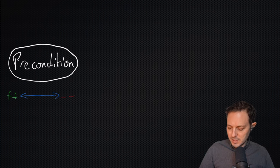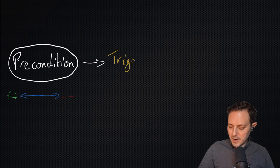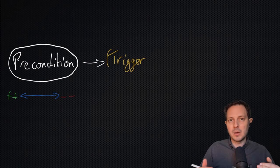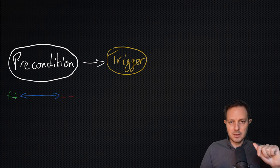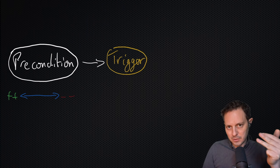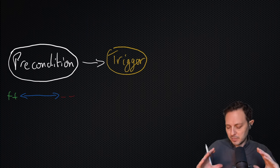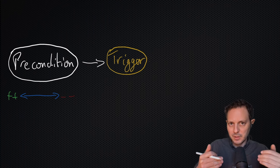From the precondition, we move into the next step. The next step is having a trigger, something that will generate a reaction. So something happens, the person says something, does something, doesn't do something, there's an external event. Basically, something comes to change the precondition.